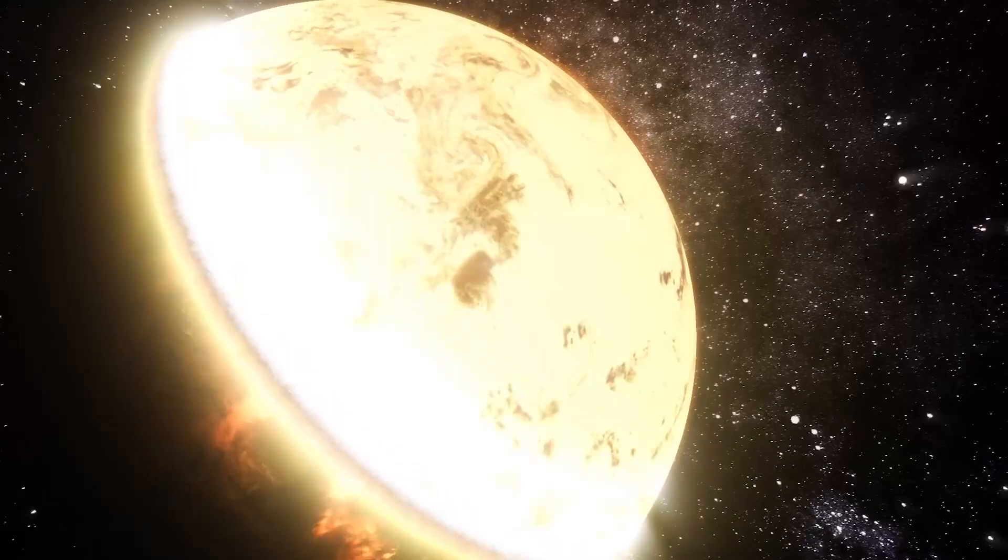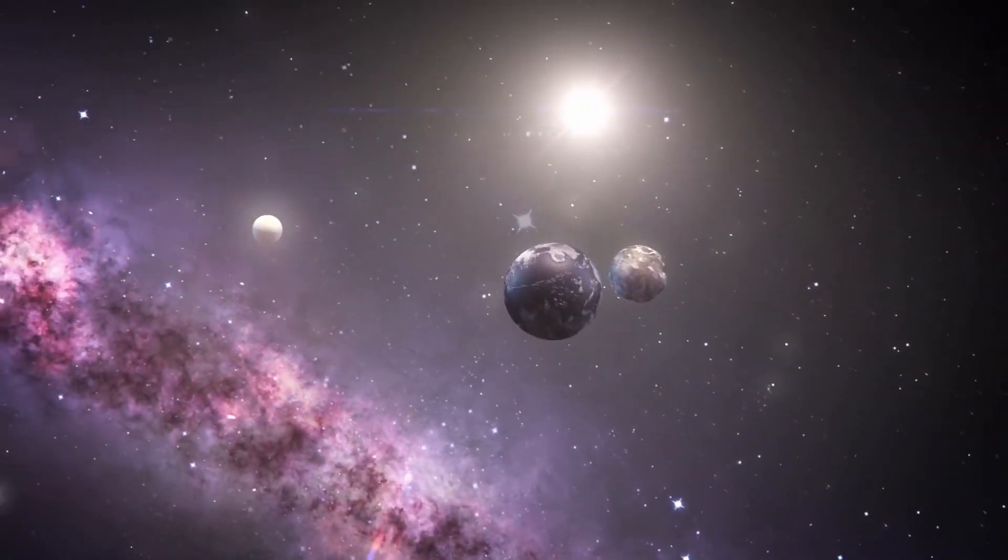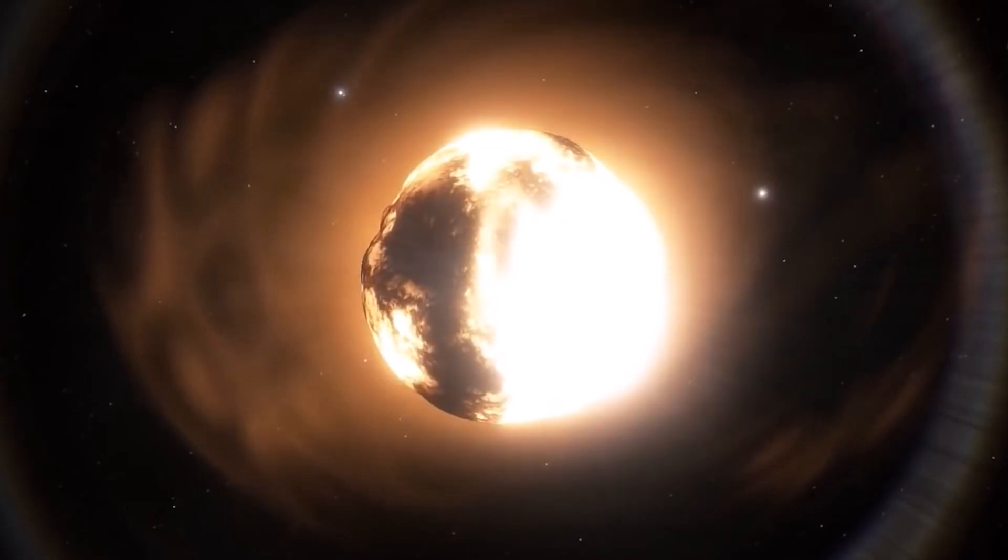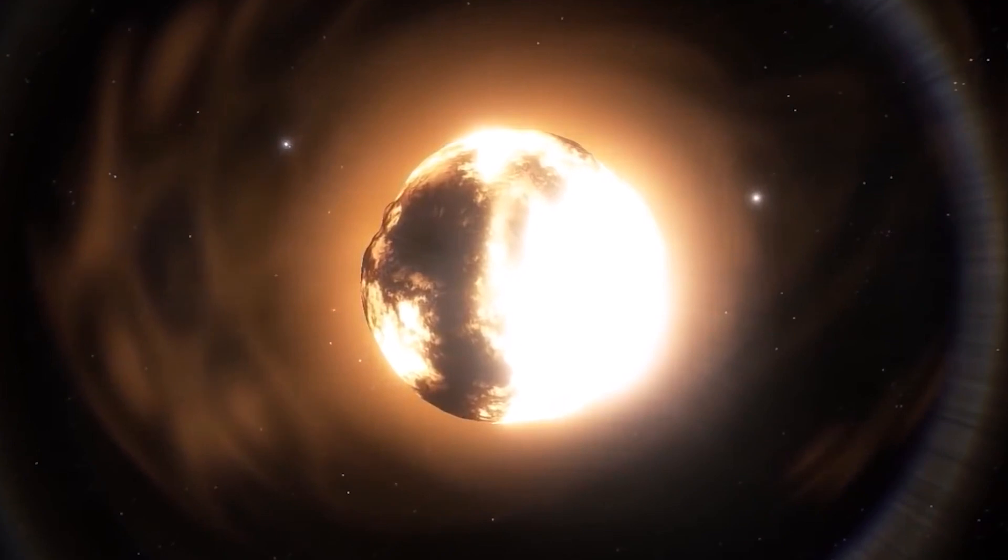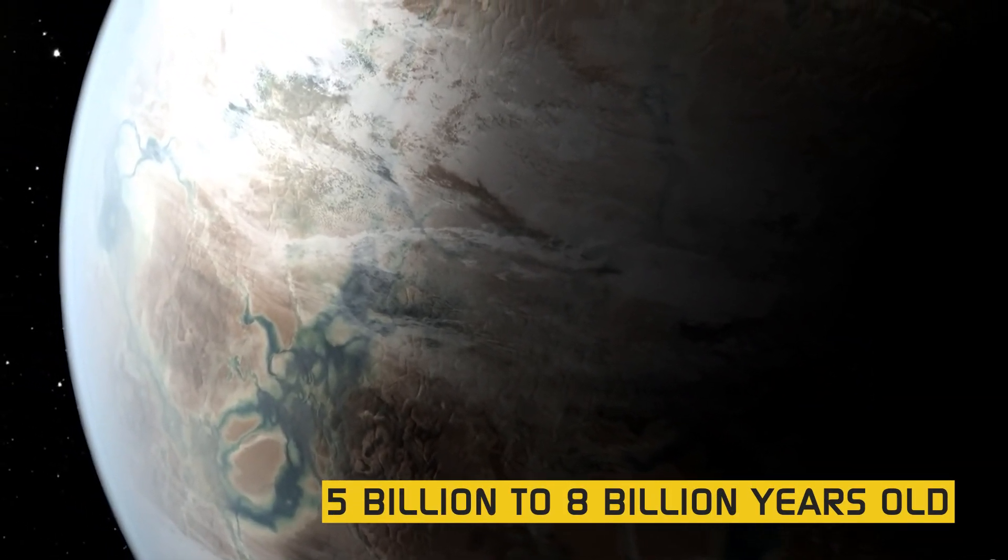And for that same reason, older planets would also be better. But not too old, of course. Eventually, they would exhaust their interior geothermal heat and lose their protective geomagnetic fields. So ideally, the planet would have to be 5 billion to 8 billion years old.